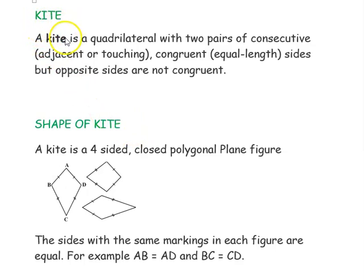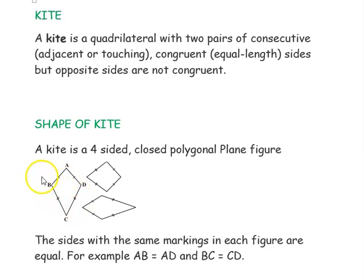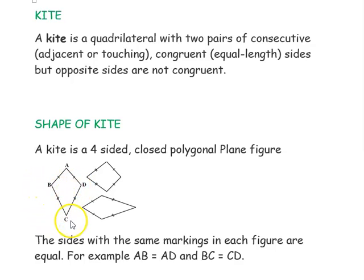The next quadrilateral is a kite. A kite is a quadrilateral with two pairs of consecutive — meaning adjacent or touching — sides that are congruent, but the opposite sides are not congruent. Looking at the shape: adjacent sides AB and AD are equal in length, and adjacent sides BC and CD are equal in length. However, side AB is not equal to side CB, and the opposite sides are not congruent.